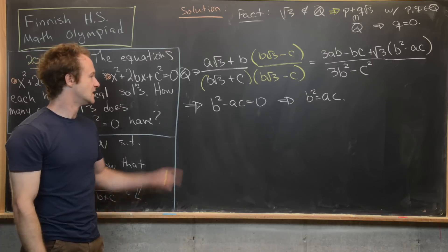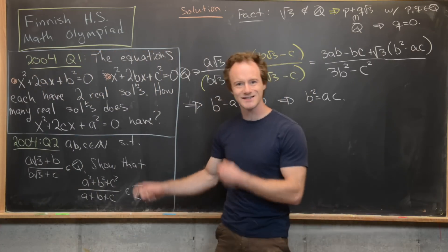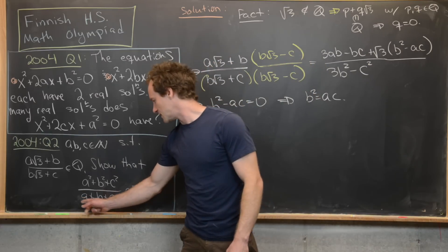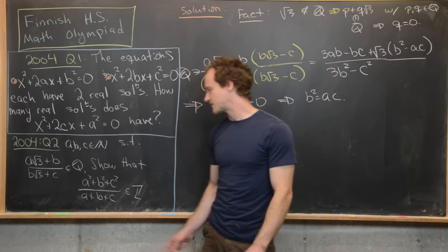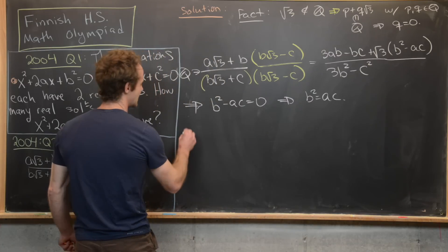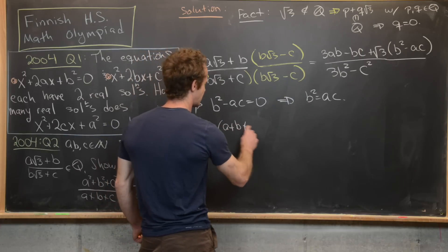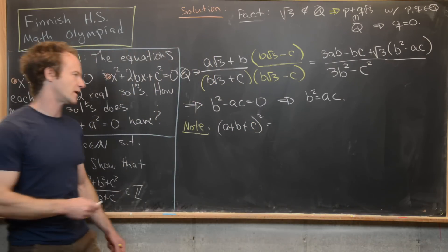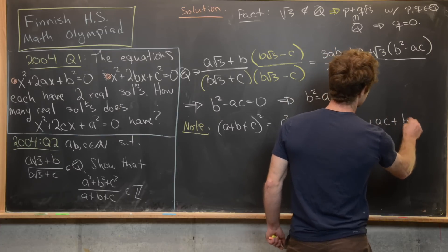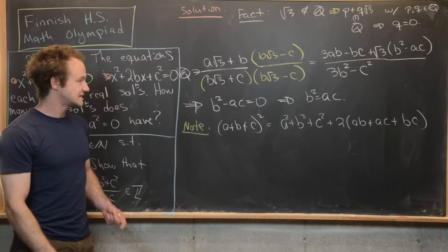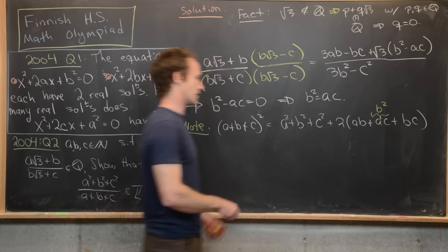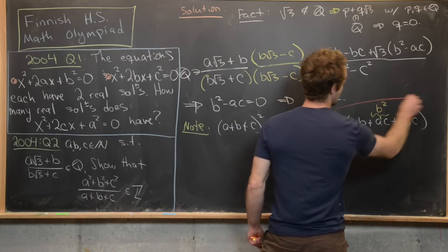Now let's use b² = ac to show (a² + b² + c²) / (a + b + c) is an integer. We want to factor an (a + b + c) out of the numerator. Consider (a + b + c)² = a² + b² + c² + 2(ab + ac + bc). Since ac = b², we can replace ac with b², so the cross terms become 2(ab + b² + bc) = 2b(a + b + c).